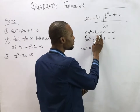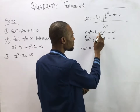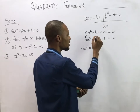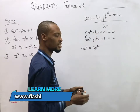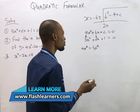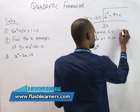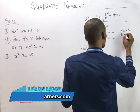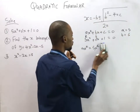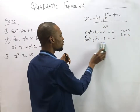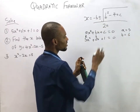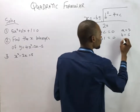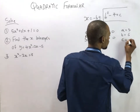Similarly, bs is the same thing as 6s, meaning s equals s, so b equals 6. With that, we can comfortably say that c, which is the constant, is 1. So a equals 5, b equals 6, and c equals 1.